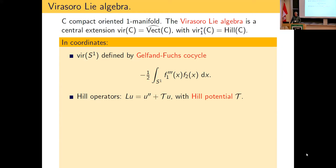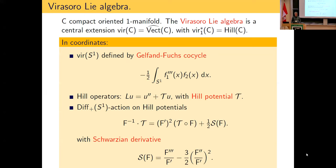The Hill operators are Schrödinger operators on the circle; the potential in this context is called the Hill potential. What makes this Virasoro is really the way it transforms under diffeomorphisms. For orientation-preserving diffeomorphisms — the subscript plus always means orientation-preserving — the action on Hill potentials is given by a formula involving the derivative squared and an affine term given by the Schwarzian derivative.